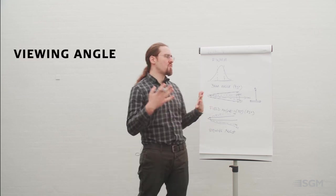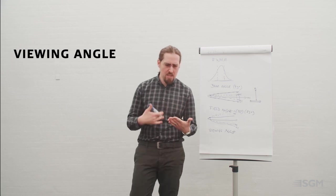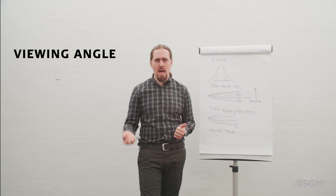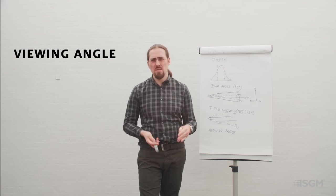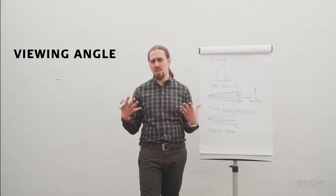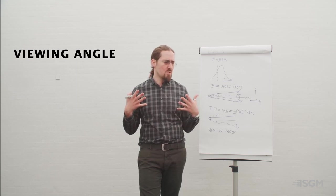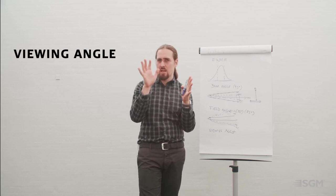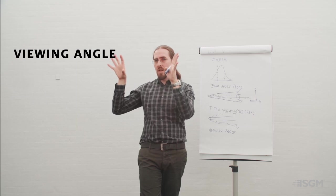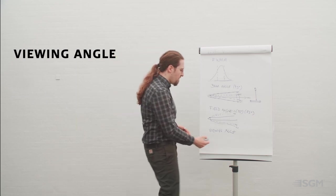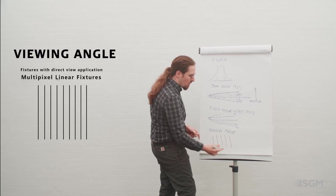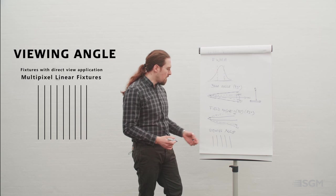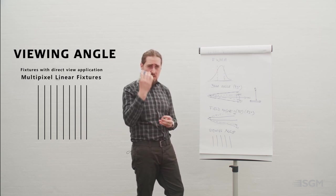The viewing angle is for fixtures meant to work for direct view — not to illuminate a surface. Think about media facades, pixel mapping, LED screens, video walls — all of them share this concept. The viewing angle evaluates how viewers will look at the light and when they start losing the ability to see the effect. For example, linear fixtures like VPLs face the audience — you see their output directly — but as viewers move off-center, they start losing the viewing angle.